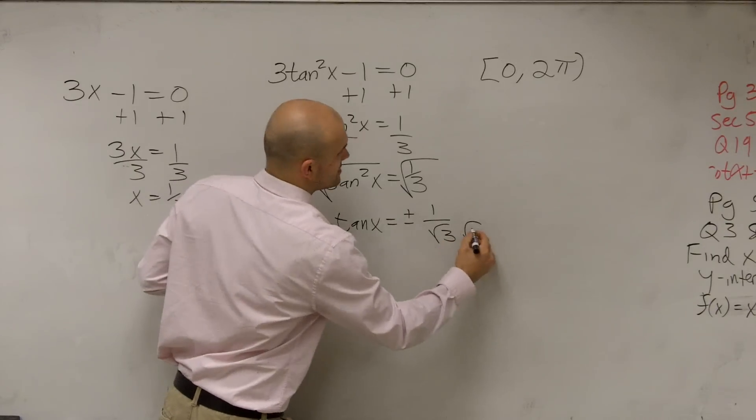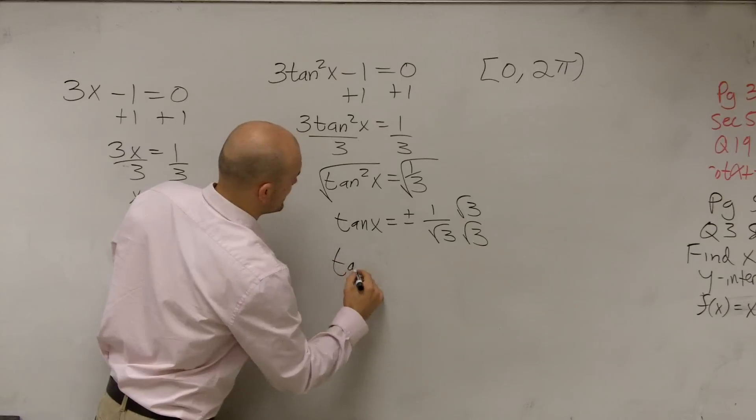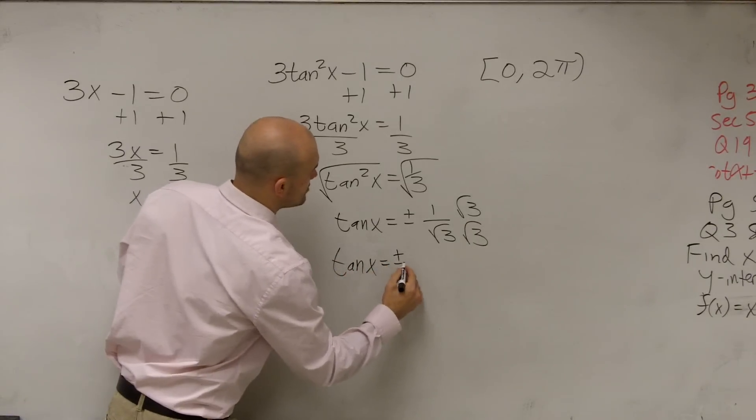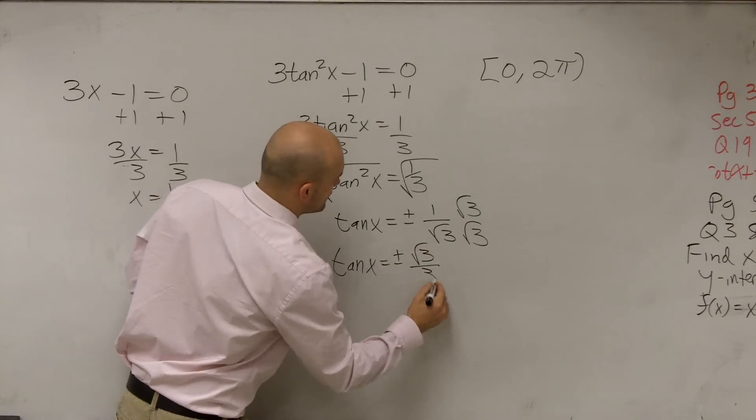I can rationalize the denominator. And therefore, my tangent of x equals plus or minus the square root of 3 over 3.